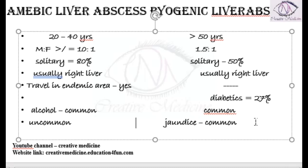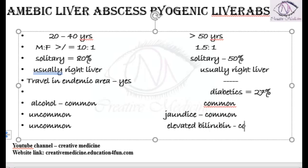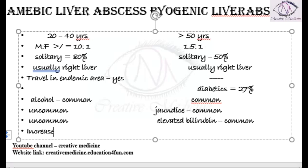Elevated bilirubin is also uncommon in amoebic liver abscess, whereas elevated bilirubin is common in pyogenic liver abscess. Increased alkaline phosphatase is common in both pyogenic liver abscess and amoebic liver abscess.